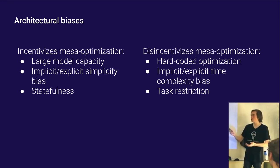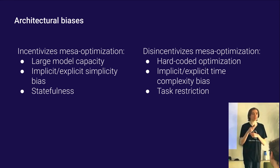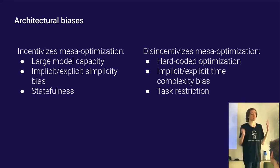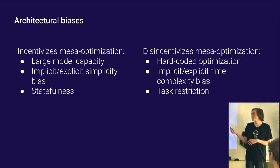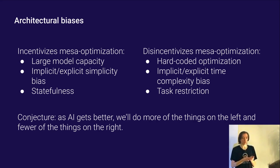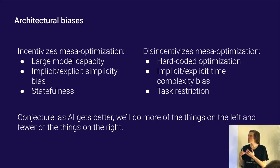My guess is that at some point, just for capabilities reasons, people are going to want to build agents that can competently take actions in the world. The sorts of procedures we're building are moving towards things that incentivize optimization: more imitation of humans, bigger models, more simplicity bias. Larger models actually have a stronger simplicity bias than smaller models — that might be counterintuitive, but it is true.